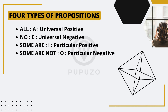Propositions can be classified into four types based on their meaning and structure. Each type conveys a different relationship between the subject and the predicate, and they are represented by specific symbols. Let's explore each type and understand their characteristics.